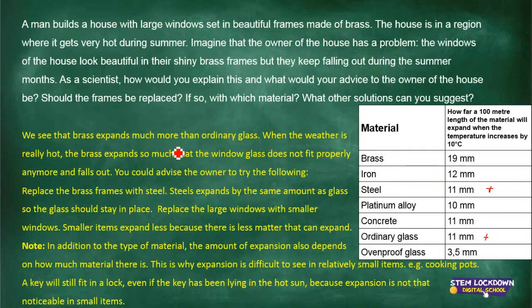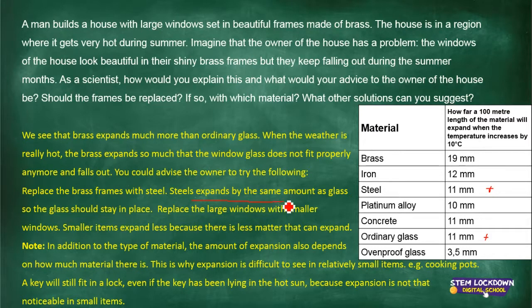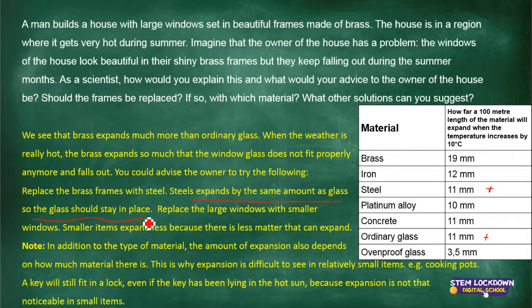The brass expands much more than ordinary glass. When the weather is very hot, the brass expands so much that the window does not fit properly — it falls off, cracks, or breaks. The advice to the owner: replace the brass frames with steel frames, because steel expands the same amount as glass. With steel frames, the glass stays in place and won't fall off or crack because they complement each other.